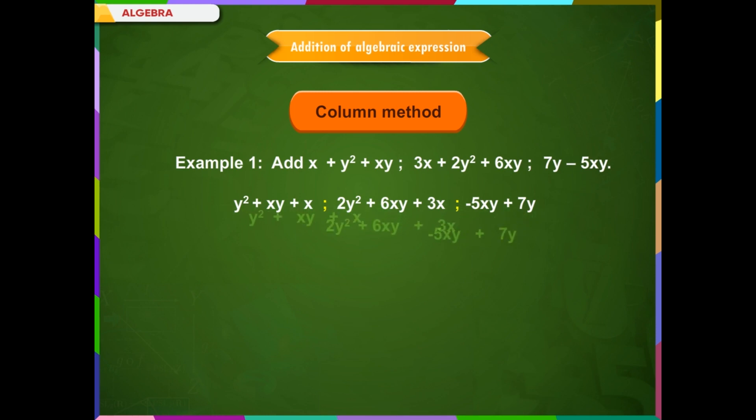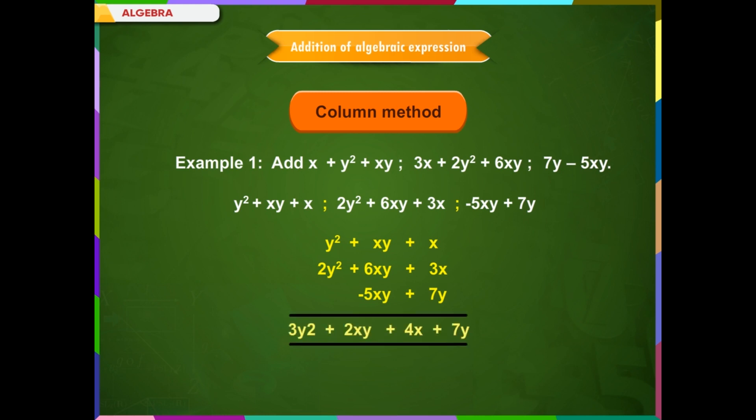Step 2: Write the expressions in columns so that like terms are one below the other, then add each column separately, beginning from the left. We get 3y² + 2xy + 4x + 7y.